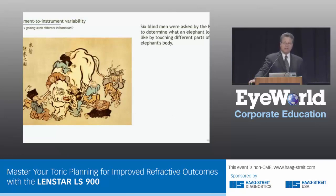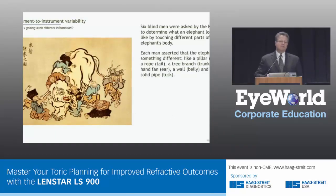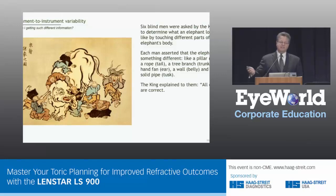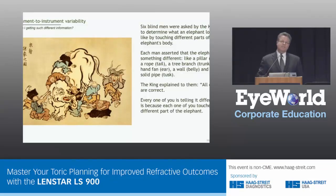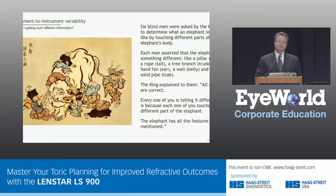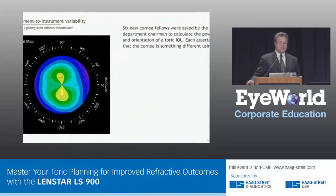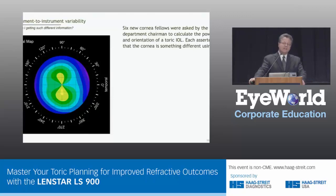What do we use, and how do we deal with conflicting information in a way that allows us to get the best possible answer? I'm reminded of the story of the six blind men who were asked by the king to describe an elephant by touching different parts of his body. Each man asserted that the elephant was something different — like a rope, like a tree branch, like a hand fan, like a pipe — because they were all touching different parts. And the king explained: you're all right. Each one of you is telling it differently because you touched a different part of the elephant, and the elephant really has all the features you describe.